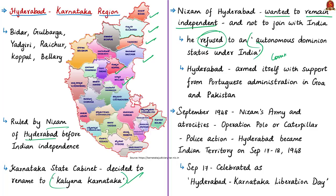The Nizam refused negotiations, and it was reported that Hyderabad was arming itself with support from the Portuguese administration in Goa and the government of Pakistan. This led to communal clashes and added tension. Sardar Vallabhbhai Patel described the idea of an independent Hyderabad as 'an ulcer in the heart of India which needed to be removed surgically' — referring to the independence claim by the Nizam, not to the region itself. By September 1948, reports emerged of atrocities on innocent civilians, prompting India to carry out a police action.